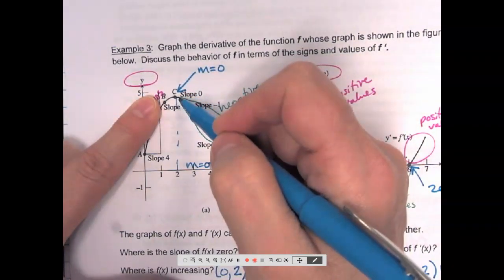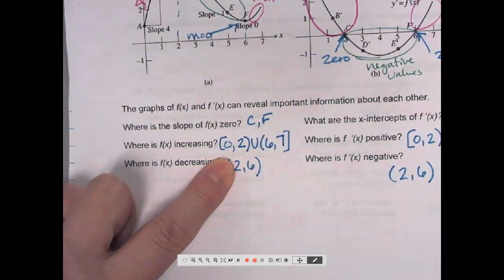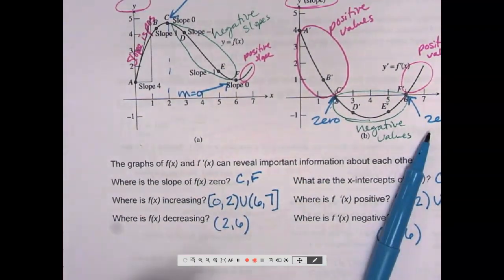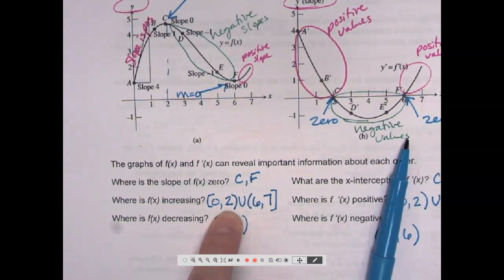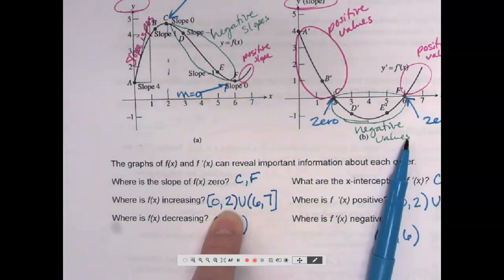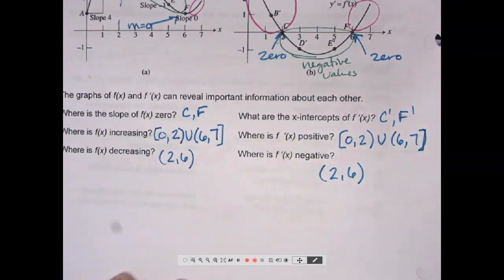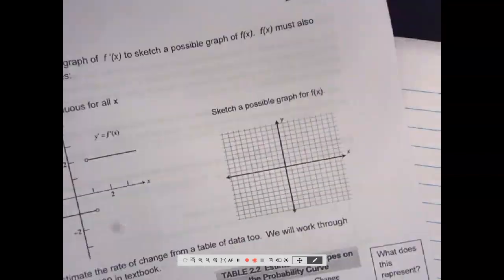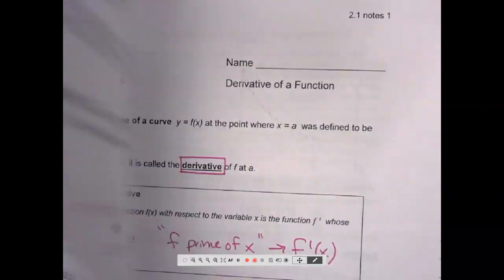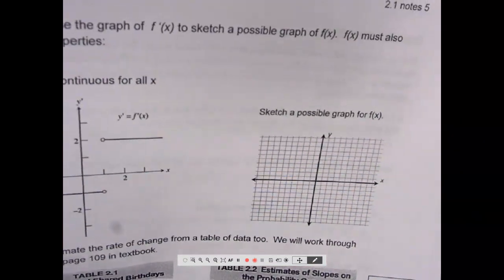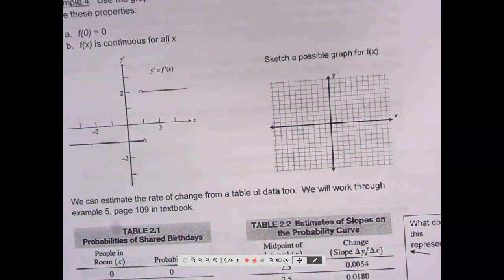Because remember we said at x equals 2, we said the slope is 0. So if the slope is 0 there, can it also be going uphill? Right. So 2 is like where it stops. So I've already said, at 2 the slope is 0. So I'm not going to include that in where it's also increasing. It increased right up to the point where it was 0. Any other questions? I am going to save those for tomorrow. And I, yeah, let's save those for tomorrow. So let's get out our textbooks.